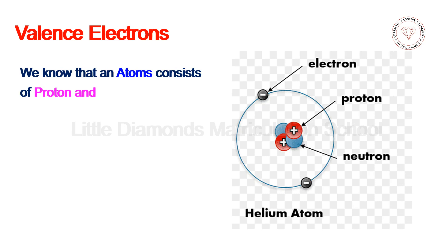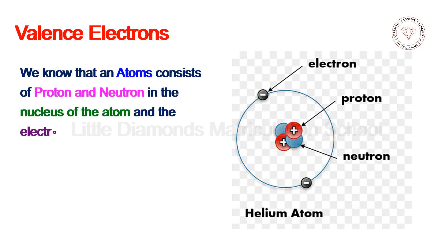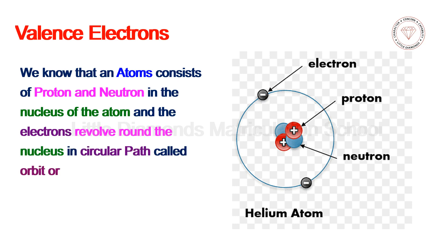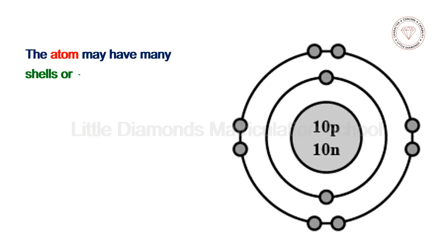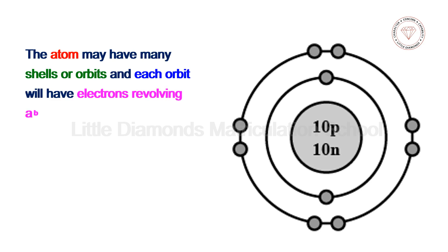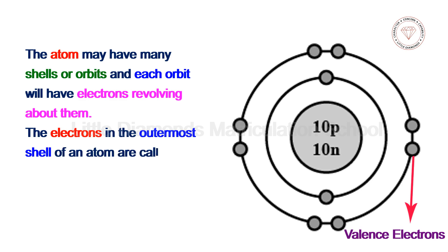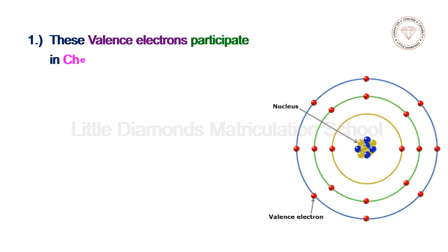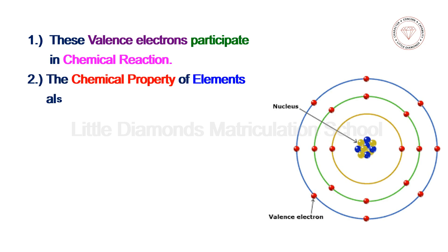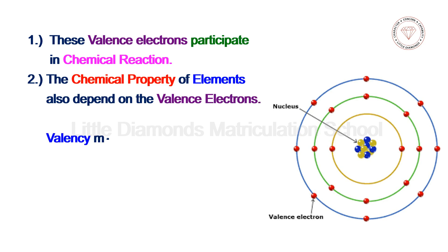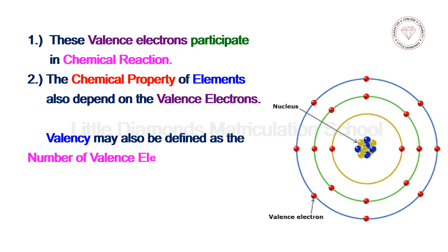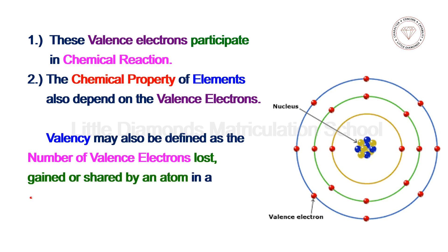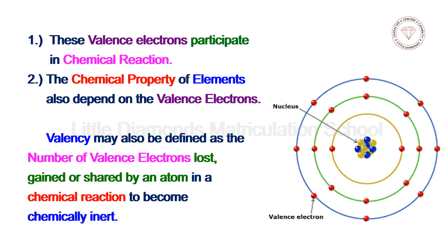Let us see the role of valence electrons in chemical reactions. An atom consists of protons and neutrons in the nucleus, and electrons revolve around the nucleus in circular paths called orbits or shells. The electrons in the outermost shell of an atom are called the valence electrons. These valence electrons participate in chemical reactions, and the chemical properties of elements also depend on them. Valency may also be defined as the number of valence electrons lost, gained, or shared by an atom in a chemical reaction to become chemically inert.